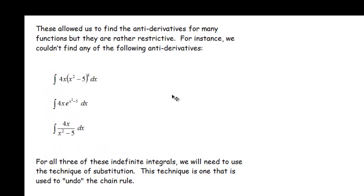For instance, we can't find the anti-derivatives of any of these three functions: where we've got x squared minus 5 raised to the 9th power with a 4x out here; where x squared minus 5 is the power on our exponential e; and where x squared minus 5 is down in the denominator. So for all three of these indefinite integrals we're going to need to use a different technique called substitution.